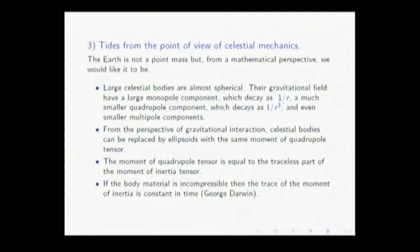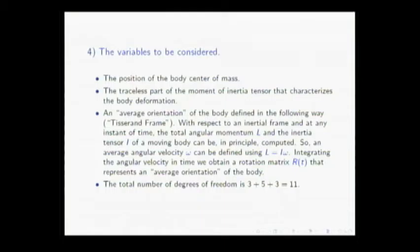Another important result is a theorem by George Darwin — son of Charles Darwin — which states: if you have an incompressible body and you deform it, the trace of the moment of inertia does not change with the deformation. The other components change, but not the trace — it remains constant. So in the model we constructed, the variables are: first, the position of the center of mass of the body to describe translation, as in usual point-mass celestial mechanics.